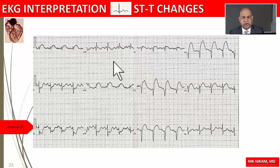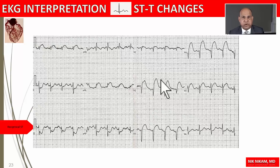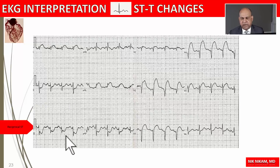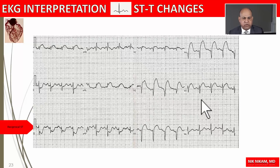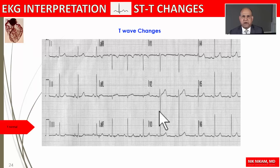Here we are seeing an example of the hyperacute phase of an anteroseptal and high anterior myocardial infarction, sometimes referred to as extensive anterior myocardial infarction, along with reciprocal ST depression in the inferior leads. These ST depressions in the inferior leads do not represent subendocardial ischemia there, but are just a reflection of the ST elevation in the anterolateral leads.